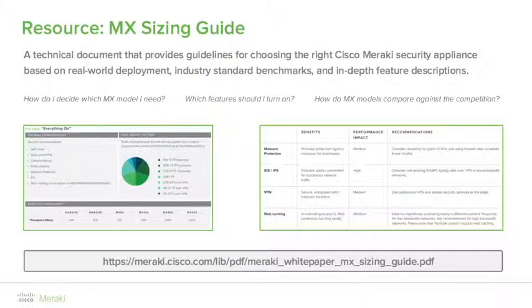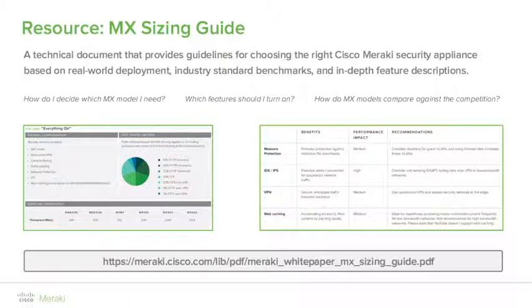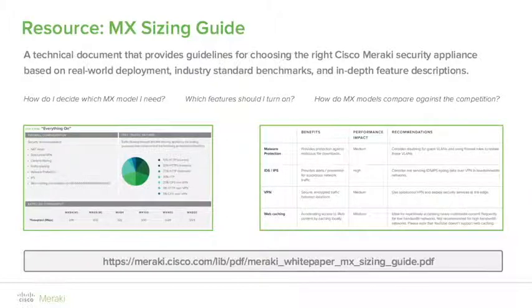MX Sizing Guide — this document is available on the Meraki website. It's a fantastic resource for helping answer the question: which MX is the best fit for my network? The Sizing Guide provides a side-by-side comparison of each MX model, covering physical requirements such as port quantity and type, PoE, and power, then comparing line rate network performance and the impact of enabling each security feature. Most useful are the real-world use cases developed in collaboration between product development, engineering, and sales. For example, a K-12 school with limited bandwidth running NAT, content filtering, layer 7 firewall rules, traffic shaping, malware protection, safe search, and web caching all turned on.